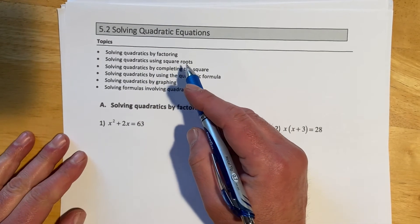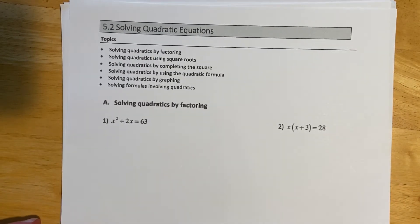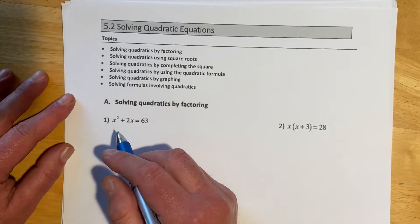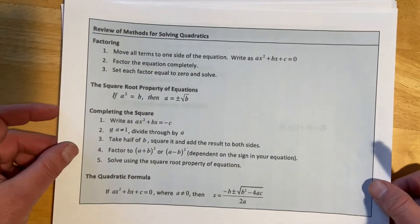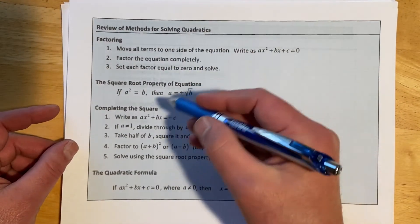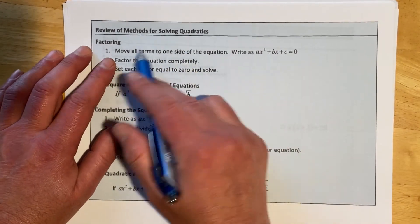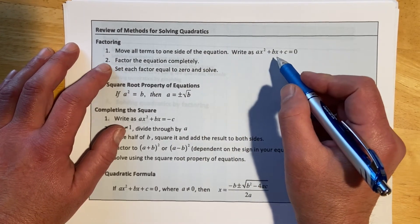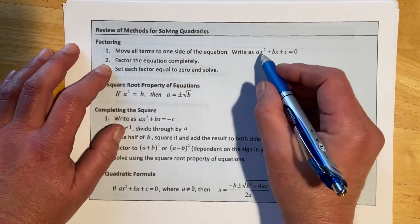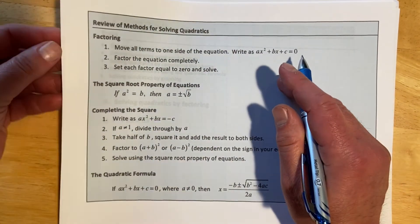So first up is factoring. Factoring is a super important skill. If you are going on in math and you haven't quite mastered factoring, this is a great time to get this under your belt. So solving quadratics by factoring, we're going to move everything over to one side of the equation, factor the equation completely, and then set each of the factors equal to zero and solve those. And hopefully that's super familiar.